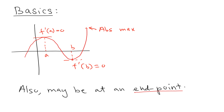Or the derivative doesn't exist. In this case, if this is the objective function, you cannot find the absolute maximum using only the derivative. That means we need to remember how to find the absolute maximum on a closed interval. You have to be very careful about what kind of situation you have — sometimes the critical point gives the answer, but sometimes the absolute maximum happens at an end point.